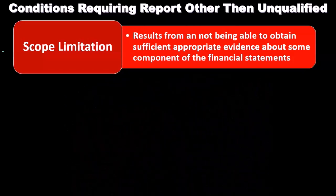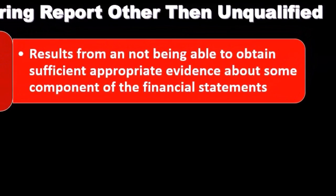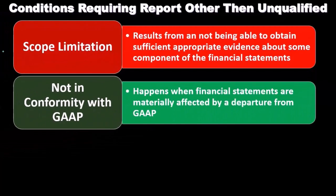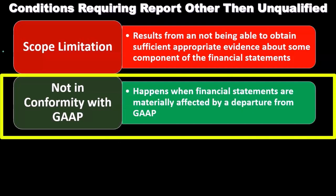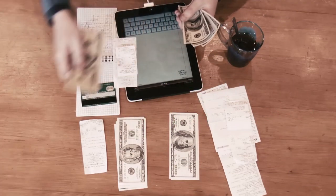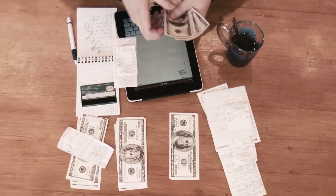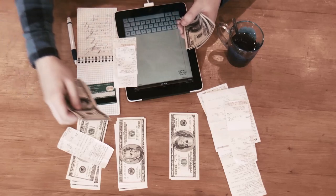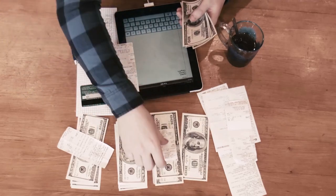We don't have the resources to audit a certain area, we can't get to it, or possibly can't have another firm do it — maybe there are regulatory limitations. That's a scope limitation: we weren't able to complete the job in that specific area. If it's a significant area, if it's material to the financial statements, that's going to cause some kind of qualification within the reporting of the financial statements.